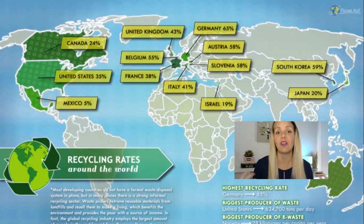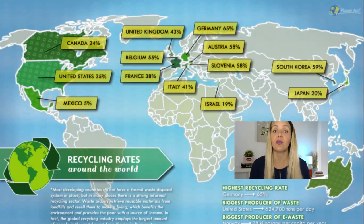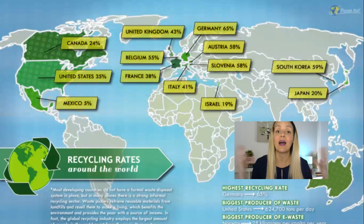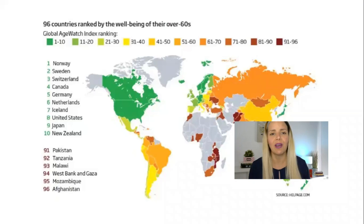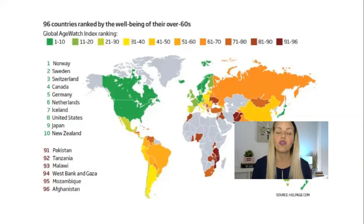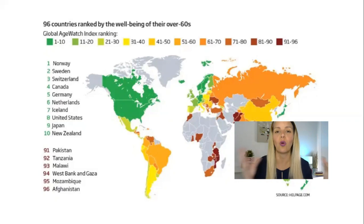Students will be talking a lot and giving their opinions. After class, you can send them the website where you found the map so they can look into the research — maybe they won't agree with the information. You could even ask them to do some writing afterward. Here's another example: 96 countries ranked by the well-being of their over-60s. You get the student to analyze it and if they don't know geography, it's a great opportunity to talk about the continents.